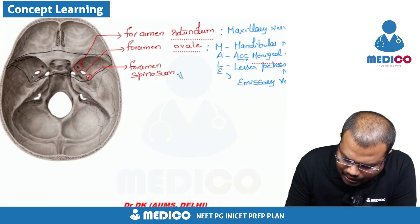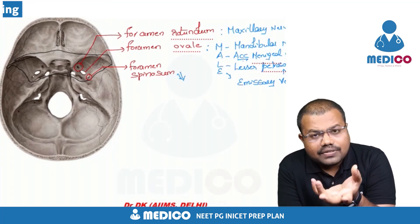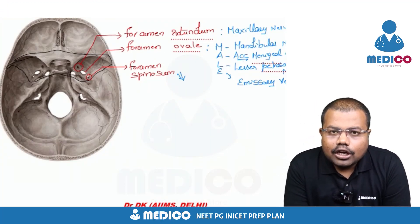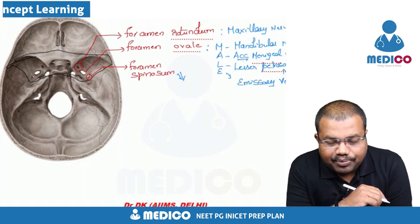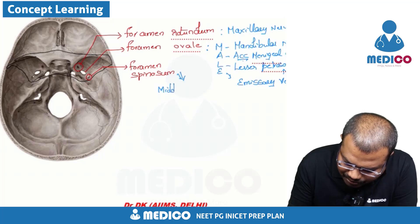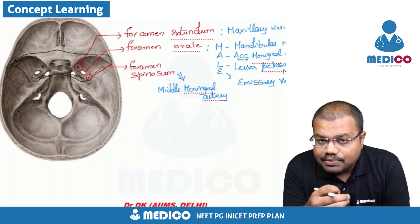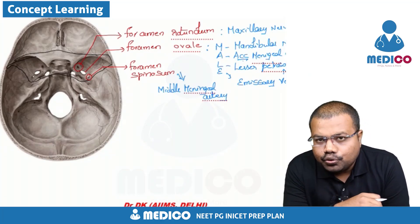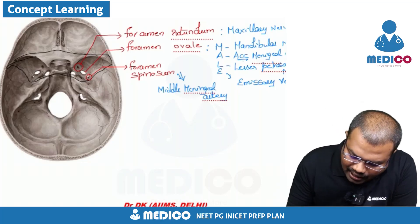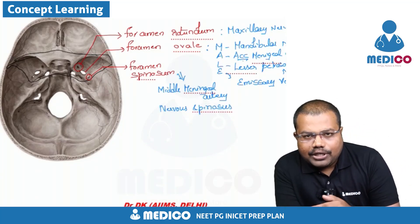The third foramen is foramen spinosum — named because the spine of the sphenoid is related to it. Through foramen spinosum, two structures pass: one is the middle meningeal artery, which we previously discussed in relation to the pterion, and the other is the nervus spinosus.